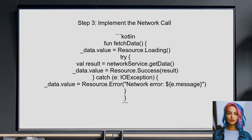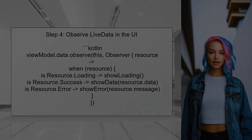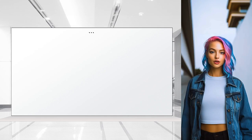Implement the network call in the view model. You can use a try-catch block to handle any potential exceptions, such as IO exception. Finally, observe the live data in your UI. This allows you to update the UI based on the current state, whether it's loading, success, or error.